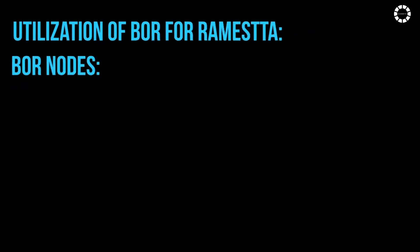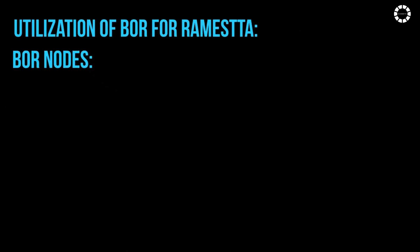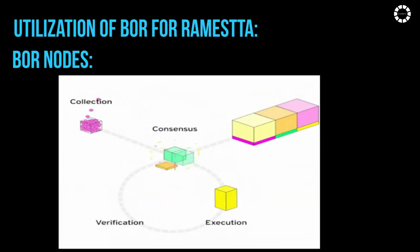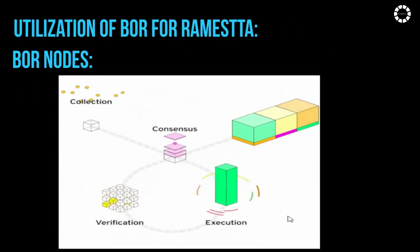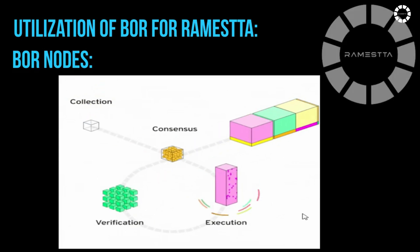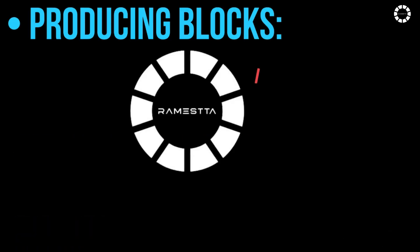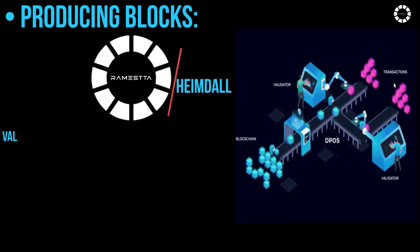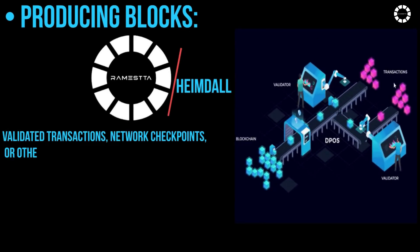Bohr nodes are computers in the Romesta network that run the Bohr software. They are responsible for executing smart contracts and processing transactions specific to the Romesta blockchain. Bohr nodes receive information from the Heimdall nodes — including validated transactions, network checkpoints, or other relevant data — and produce blocks based on that information.